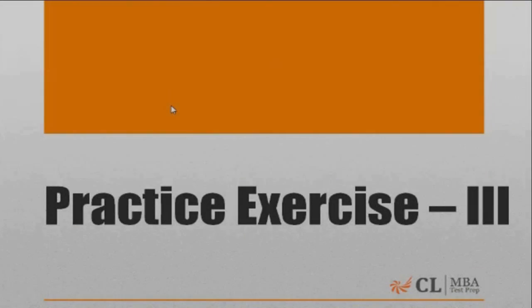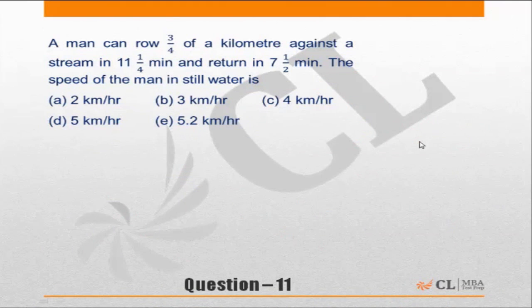Practice exercise 3, time speed distance, question 11. A man can row 3/4 of a kilometer against the stream in 11 1/4 minutes and return in 7 1/2 minutes. The speed of man in still water is how much?